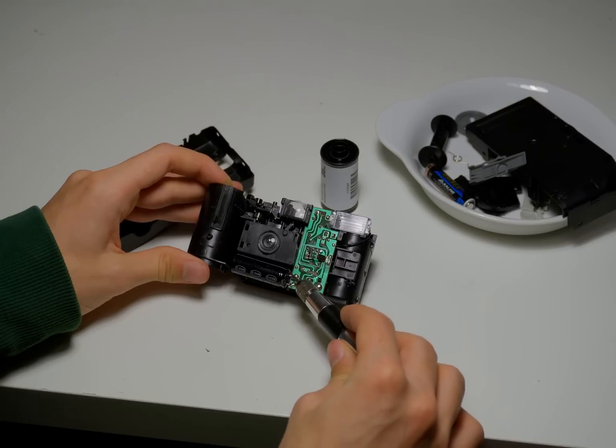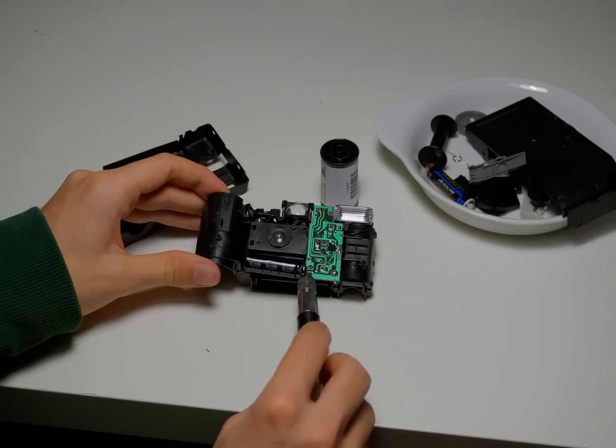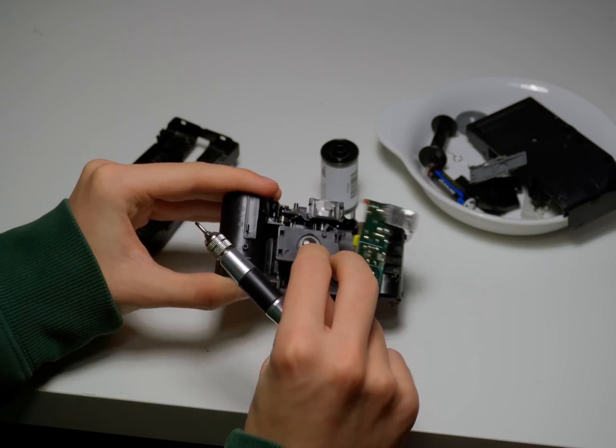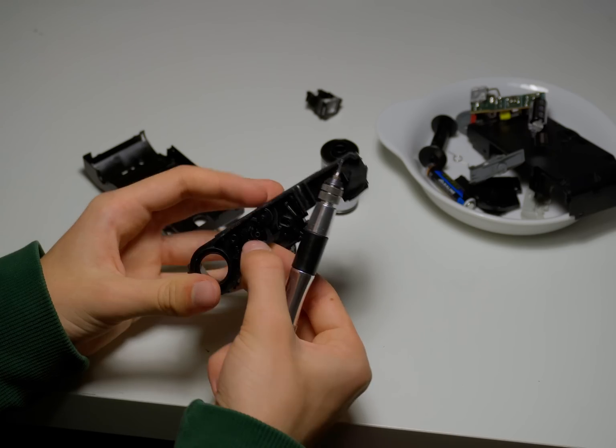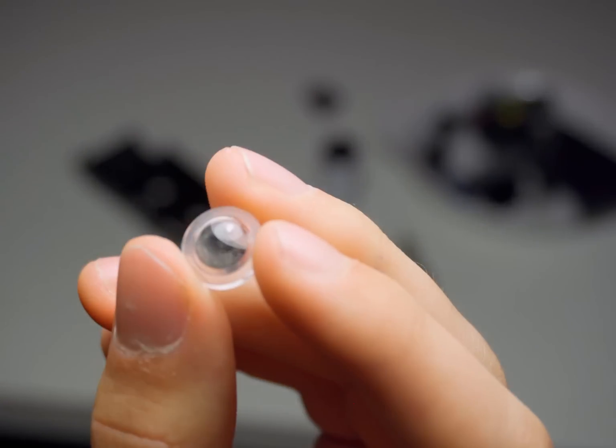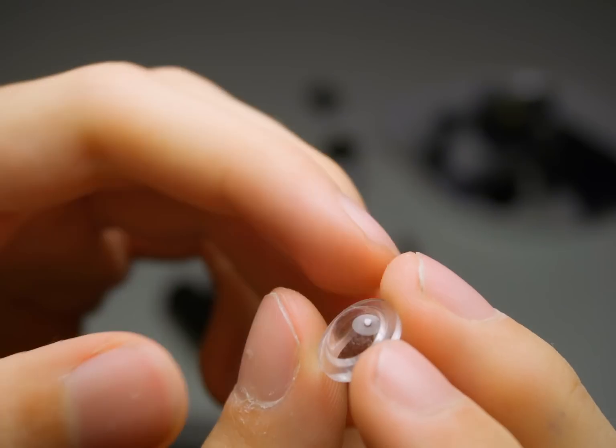After some more disassembling I got the lens out. It's literally just a small piece of plastic that looks like it has a dent inside.